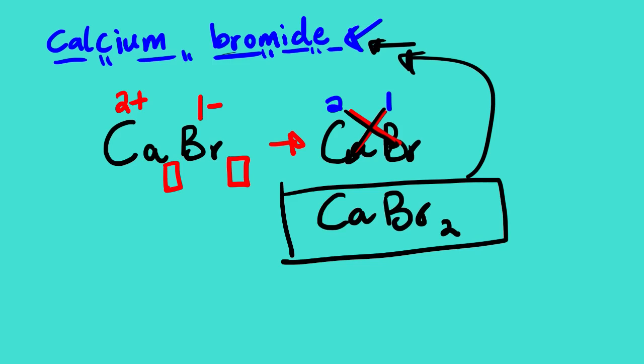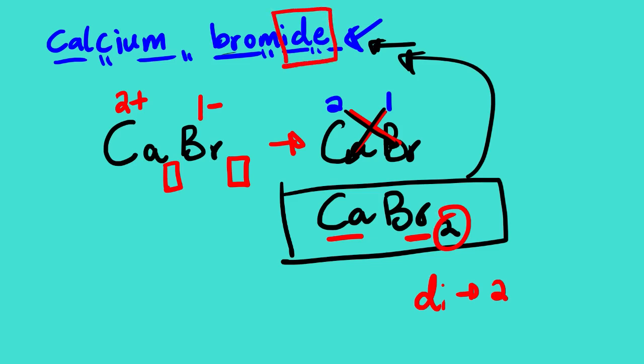So CaBr₂ is the molecular formula for this name. You may also hear this called calcium dibromide — remember that di means two, and since we have two atoms of bromine it's dibromide. The reason why we have the suffix -ide will be explained later when it comes to naming the molecular formula.